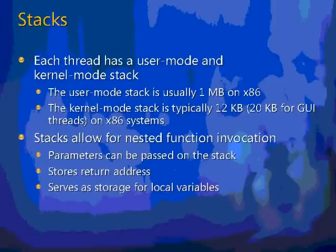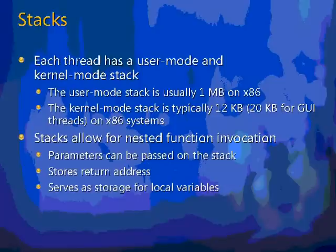The next concept is the stack, which is an area of temporary storage. Each thread in Windows has two of these: one used while in user mode, and one used while in kernel mode. The user mode stack is usually one megabyte in size — that's the default and up to the app developer to control. The kernel mode stack is usually 12 kilobytes, though some kernel mode threads doing Windows GUI work have larger stacks of 20 kilobytes.